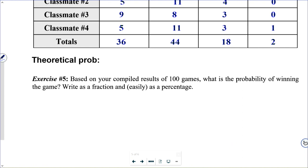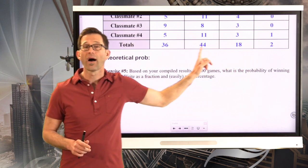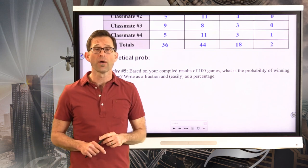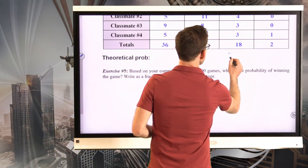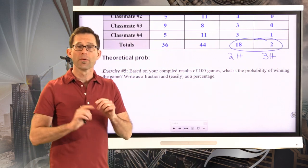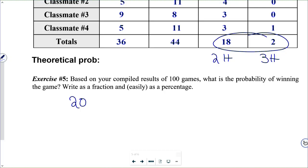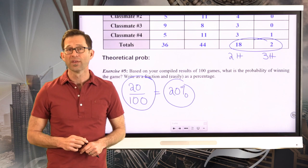Exercise number five. Based on your compiled results of 100 games, what is the probability of winning the game? Write as a fraction, and parentheses easily as a percentage. Well, again, you have different numbers down here, I hope. If you have exactly the same numbers, you either copied them off of my screen, or boy, is there a coincidence. But remember, this is hitting it twice. This is hitting it three times. Either one of these will work. So our probability as a fraction of winning will be 21 hundredths. And the reason that's an easy percent is that, of course, a percent is just a ratio out of 100.